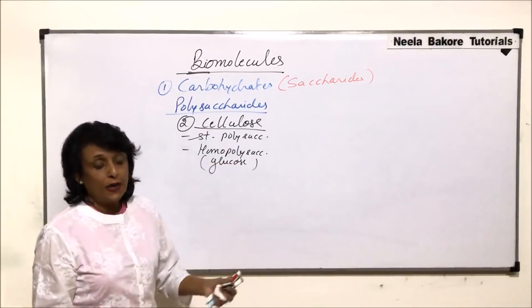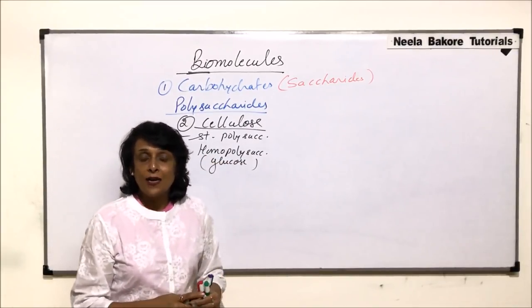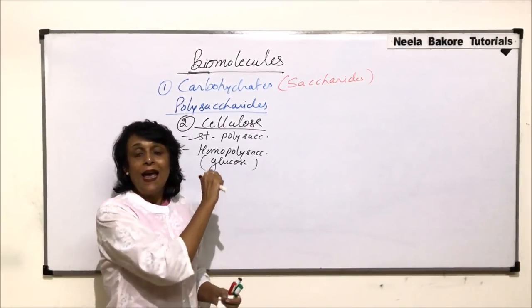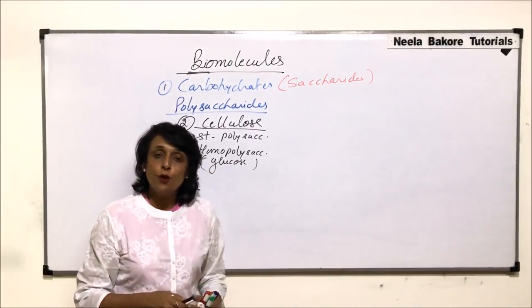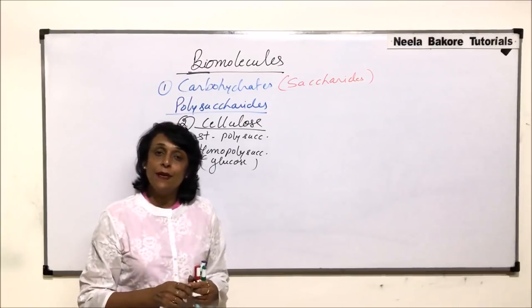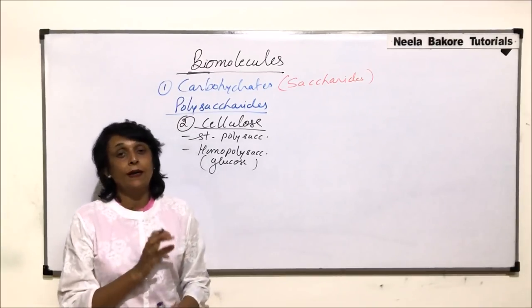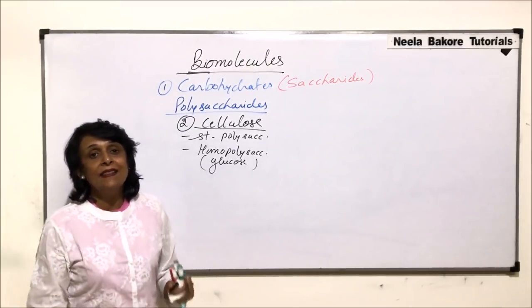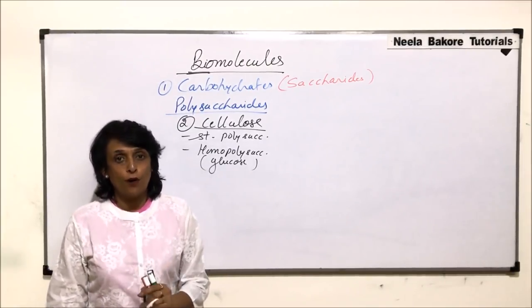Before this we talked about starch. Starch is also a homopolysaccharide made up of only glucose, and cellulose is also a homopolysaccharide made up of glucose. But there is a difference, and the difference is in the type of bond formation.